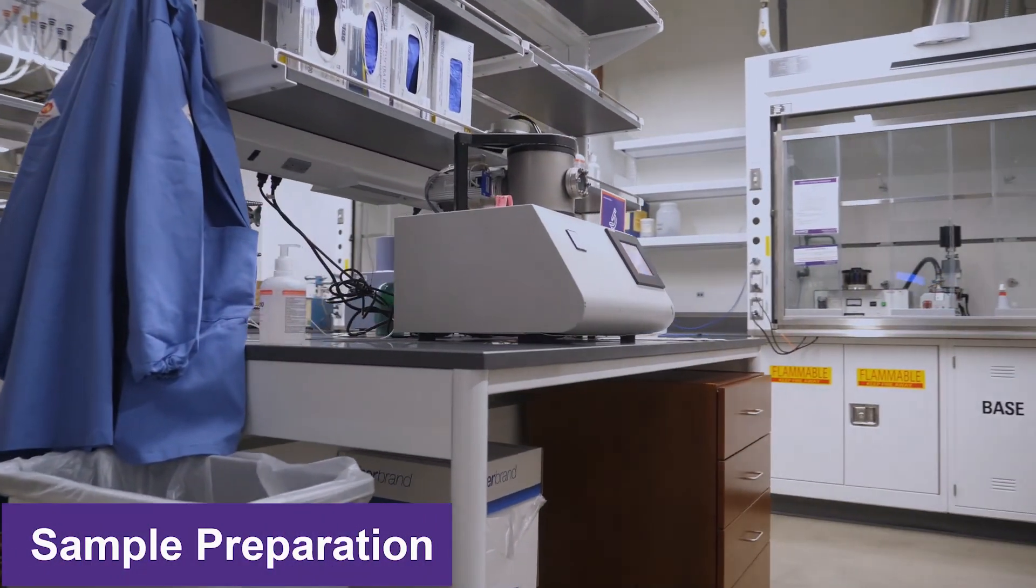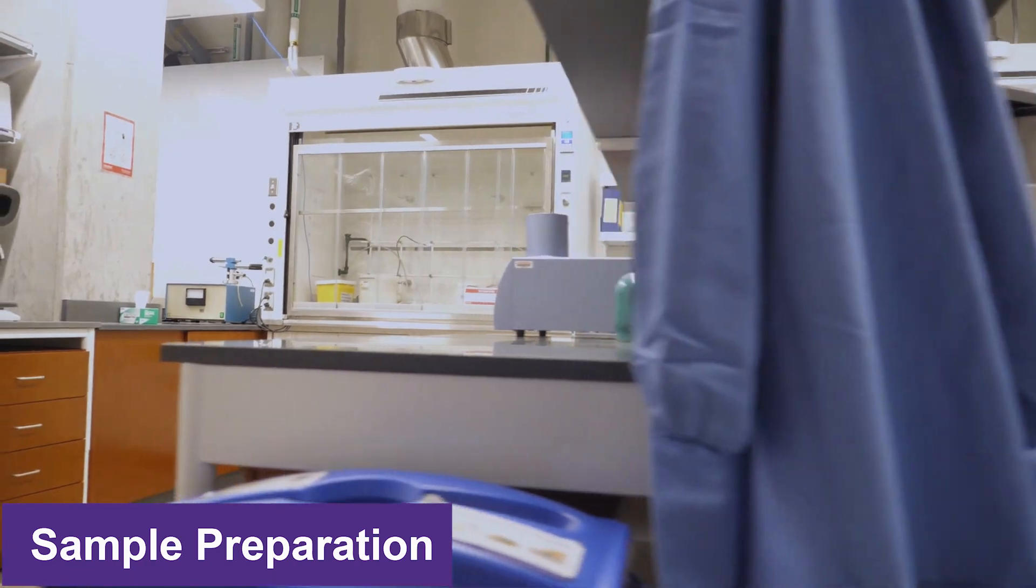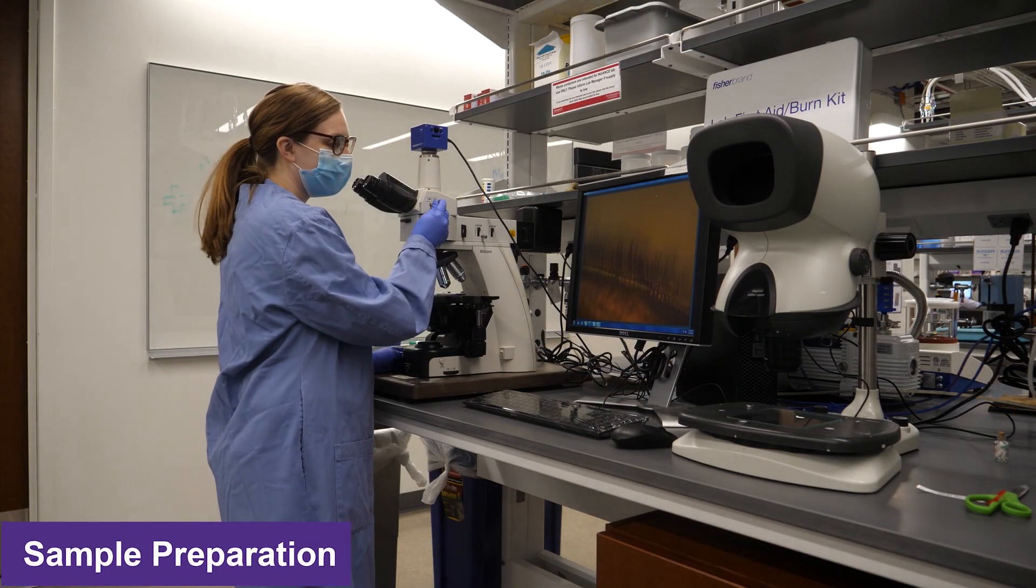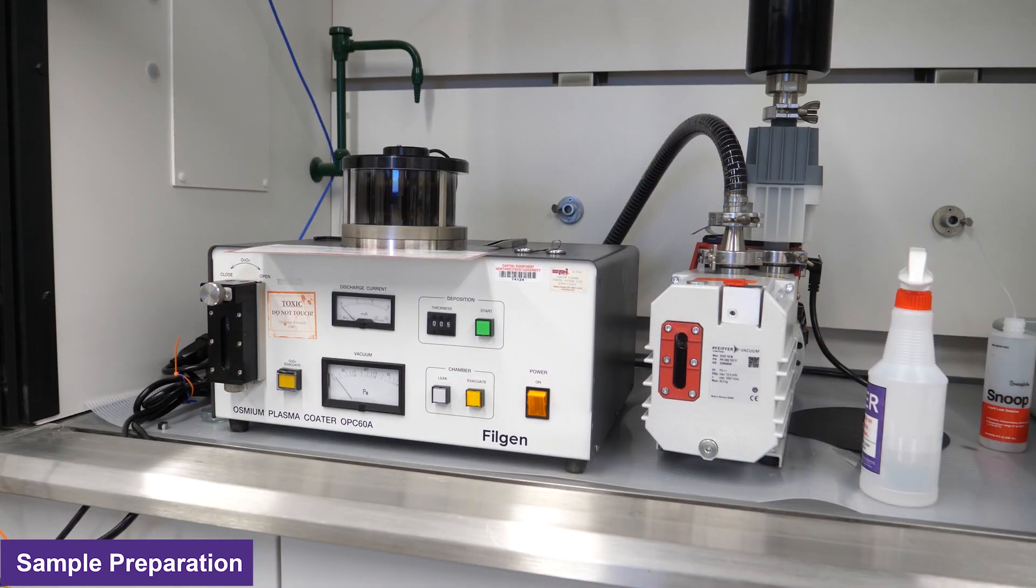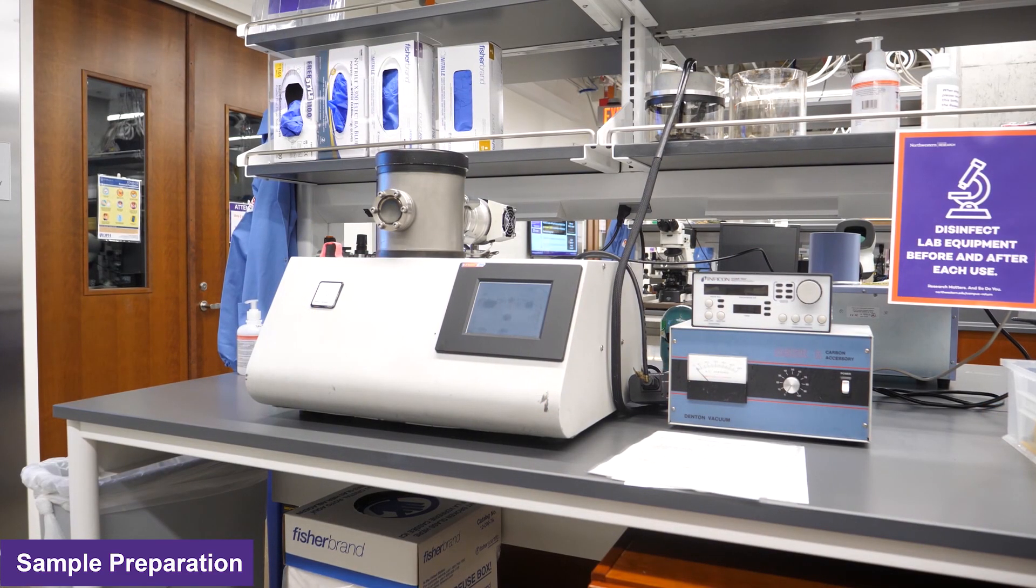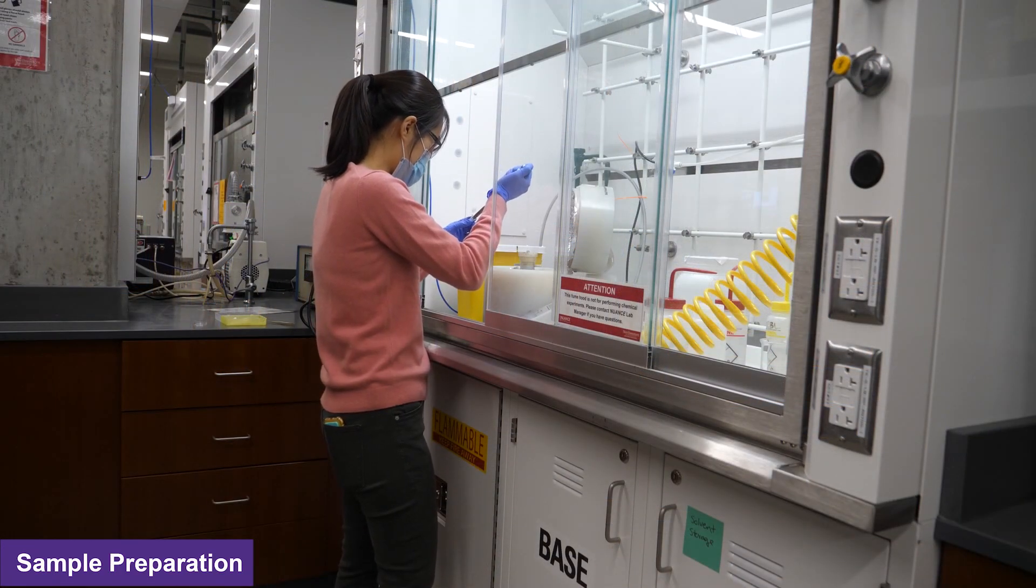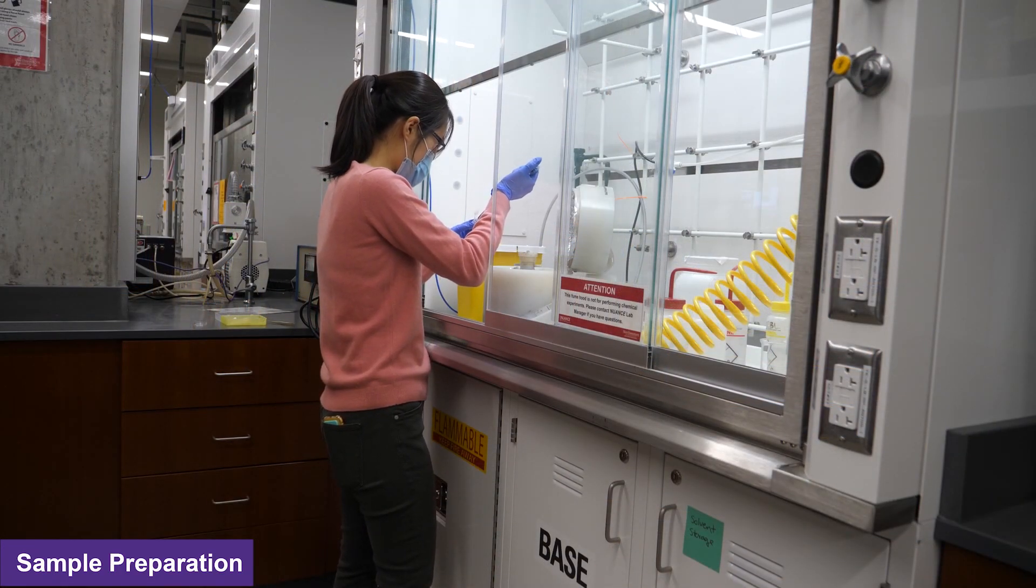All of the EPIC SEM lab sample preparation equipment can also be found on the ground floor of AB. In this lab, there is an optical microscope, an osmium coater and a sputter coater for adding a conductive layer to a non-conductive SEM sample, and a spin coater dedicated for depositing resist for the EBL process.